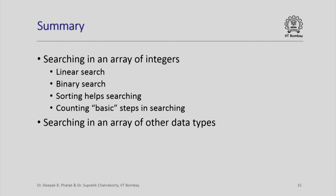In summary, we looked at techniques to search in an array of integers: linear search and binary search. Having the array sorted really helps in searching — if the array is unsorted we have no other way but to do linear search, which is not very efficient. We also saw how to count basic steps in searching, and as long as we have a comparison operator we can use the same techniques to search in an array of any other data type. Thank you.